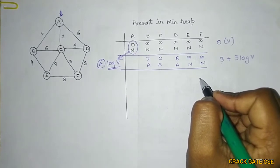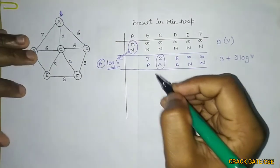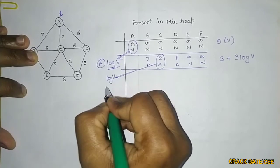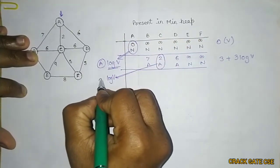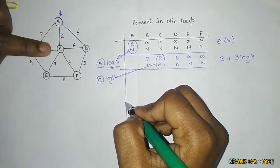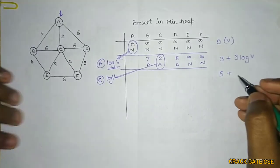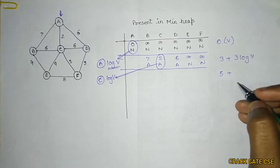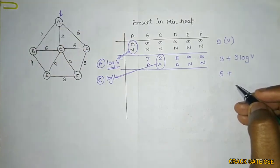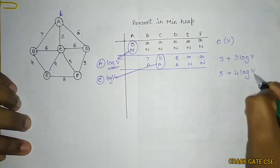Again we select the minimum value, which is 2 (vertex C). Extracting C takes O(log V). Now we find adjacent vertices of C: A, B, E, F, D — five vertices. But A has already been deleted from the min heap, so we perform the decrease key operation at 4 places: B, E, F, and D. Therefore it costs 4 log V.